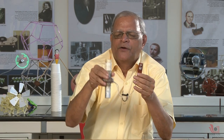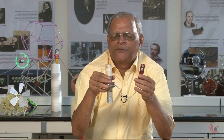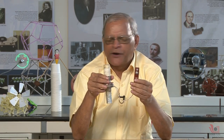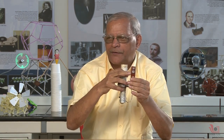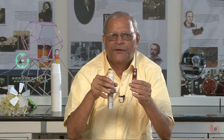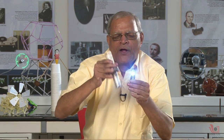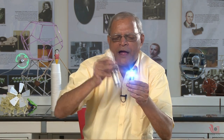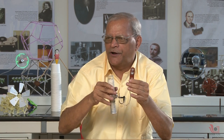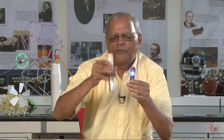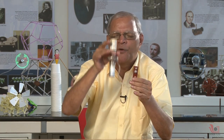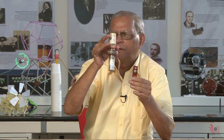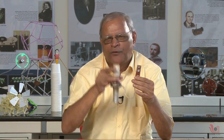Inside this you can see something very interesting. When I move this coil up, I am getting a flash here, like a camera flash. Now if I make a fast movement I get more intensity, if I make slow motion I get less intensity, and if I make very slow motion I get nothing — no light coming out.